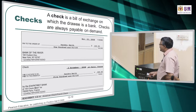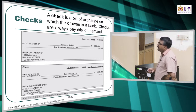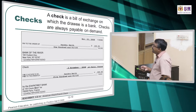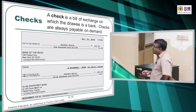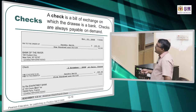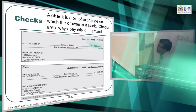A check is a bill of exchange on which the drawee is a bank. Checks are always payable on demand. So here we see the three definitions: the check, where the drawee is a bank; the note, where the drawee is a borrower; and the trade acceptance, where the drawee is a buyer. They are called different names because the parties are different.